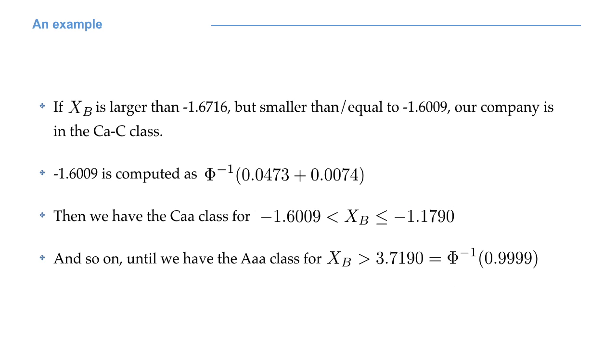Finally, the AAA class is reached if x capital B is larger than 3.7190, which is the 99.99% quantile. Notice that 99.99% is equal to 1 minus 0.0001, which is the probability for a B-rated company to enter the AAA class. Therefore, by ordering the rating classes, accumulating their transition probabilities, and applying the quantile function, we can compute all the thresholds we are interested in.